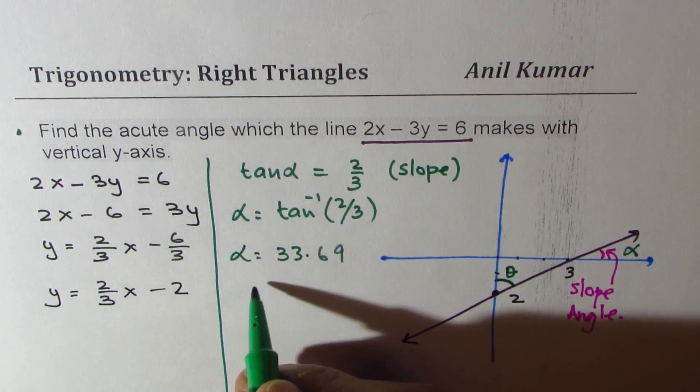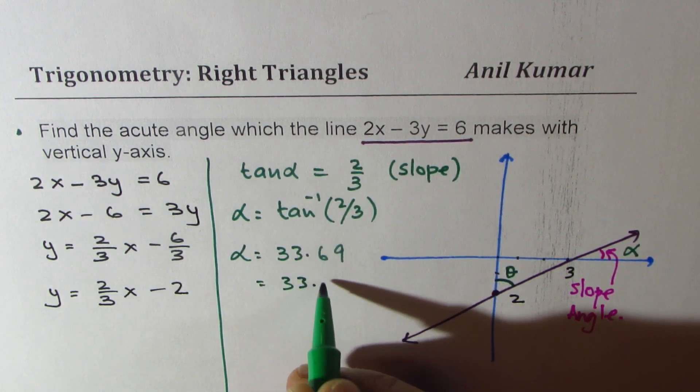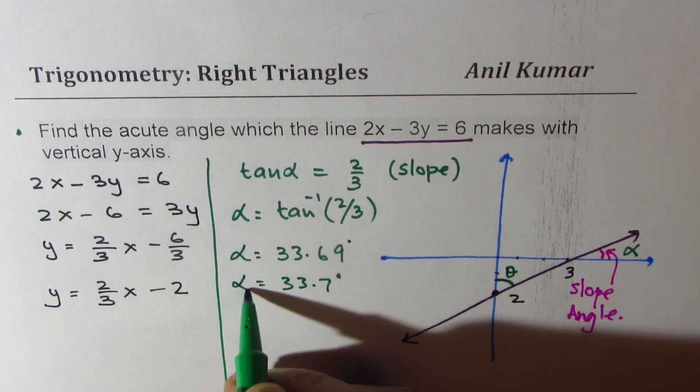So that is the angle. Let's write it to 33.7 degrees to 1 decimal place.